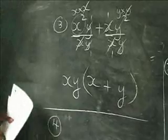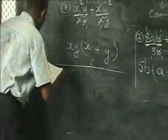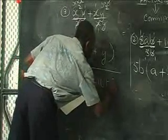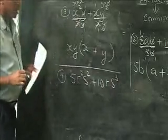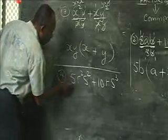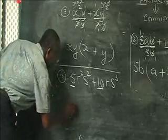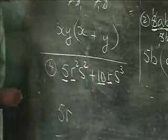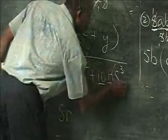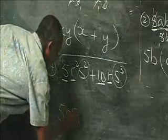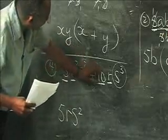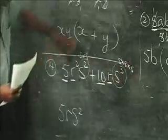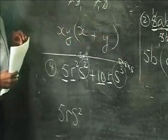We have time for one more example before we close. We have 5R squared S squared plus 10RS cubed. We check 5 and 10 — we can take out 5. We check R squared and R — what's common is just R. Then we check S squared and S cubed: we can take out S squared from both, because S cubed is S times S times S, so S squared is present in both terms.